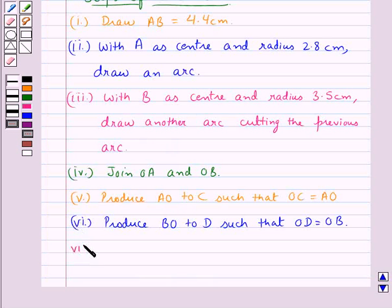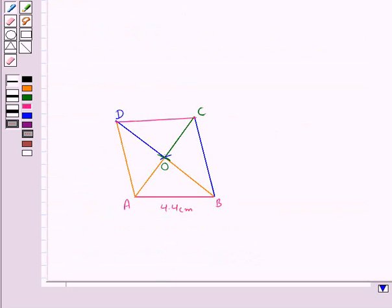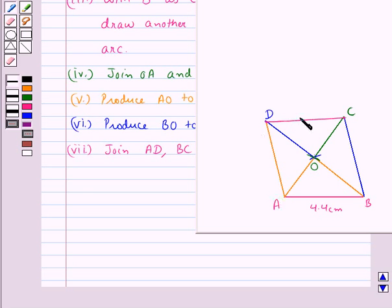Then we join AD, BC and CD. So this ABCD is the required parallelogram.